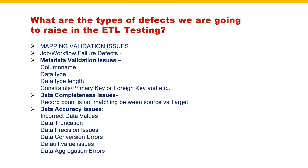I am going to explain that in the next video. By seeing that video and this video, if you can correlate it, all the things will become clearer. So first, you are going to see what is the source of truth for validation - the mapping document. You have to validate the mapping document. Once you validate the mapping document, if any issues are there, you are not going to raise a defect directly - you have to check with the respective BA, sort it out, and then prepare the test cases.